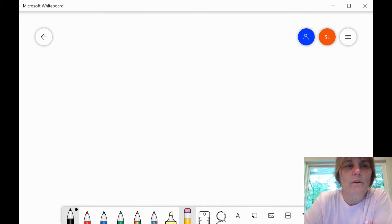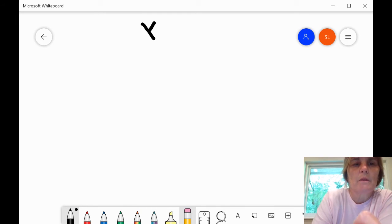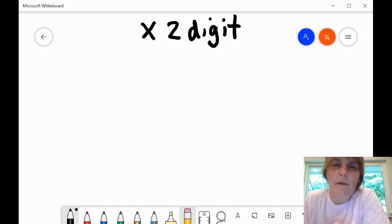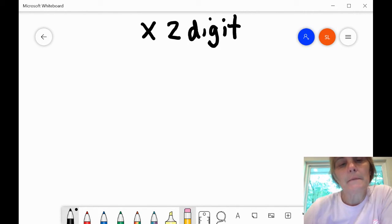All right, today what we're going to do is we're going to multiply by a two-digit number. All right, very similar to when we multiply by one digit with just a little extra added steps.